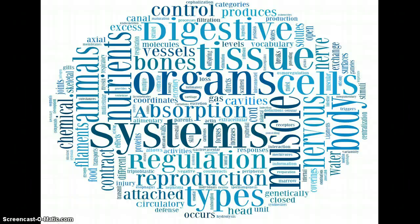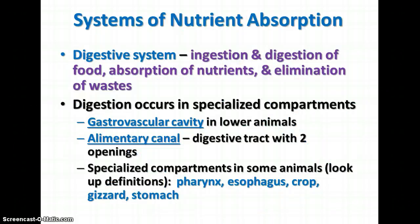Continuing on our study of the body systems, we're now going to talk about the systems of nutrient absorption. The first system is the digestive system, which is involved with both the ingestion and digestion of food, the absorption of nutrients, and the elimination of waste. There are specialized compartments in which digestion occurs.